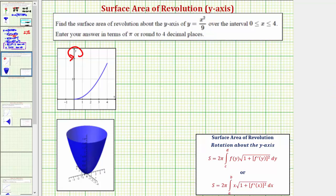Looking at our notes, to find the surface area of revolution with rotation about the y-axis, we have a choice of two formulas. Notice in the first formula we integrate with respect to y. The second formula, we integrate with respect to x. These two integrals are equivalent.